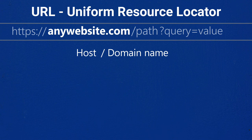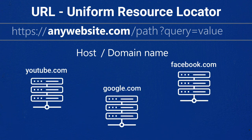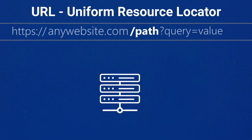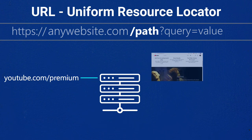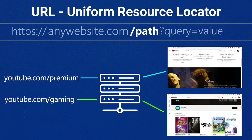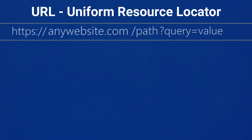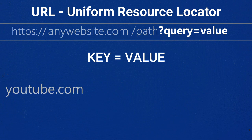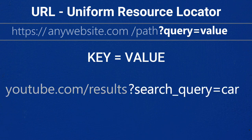Each server has its own particular domain name, such as YouTube, Google, Facebook, or any other website you know. Next is the path, which refers to a file or location on the server — it tells the server what the user wants, like if the user wants to know about YouTube Premium or go to a game page. Then there is the query, which consists of a question mark followed by parameters. By convention it is most often a sequence of key-value pairs separated by a delimiter.